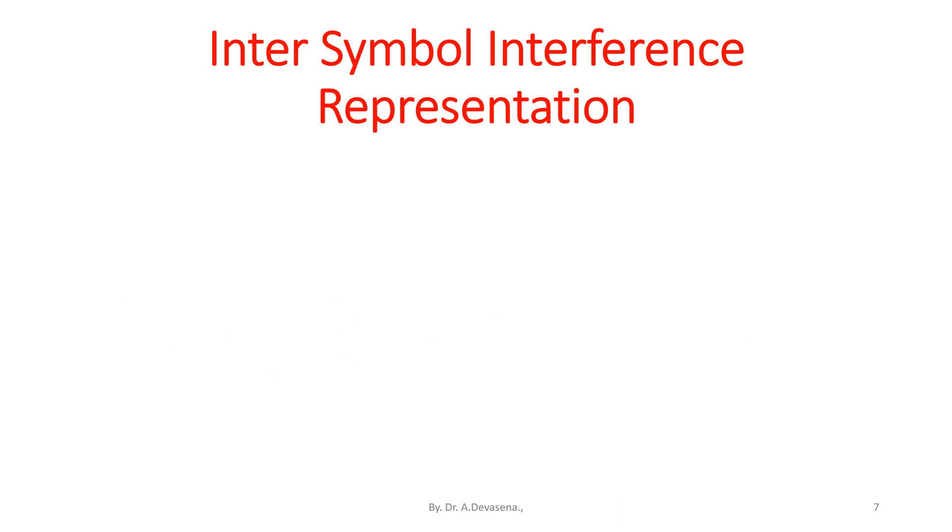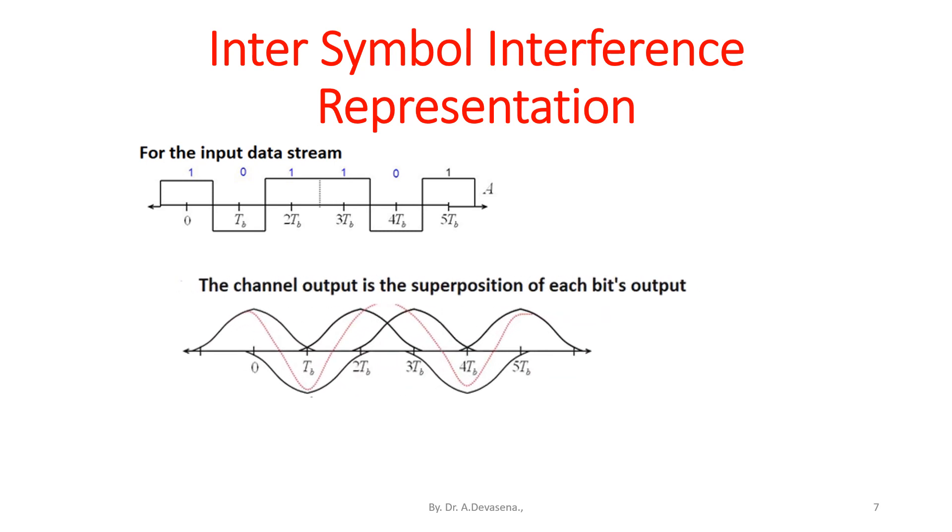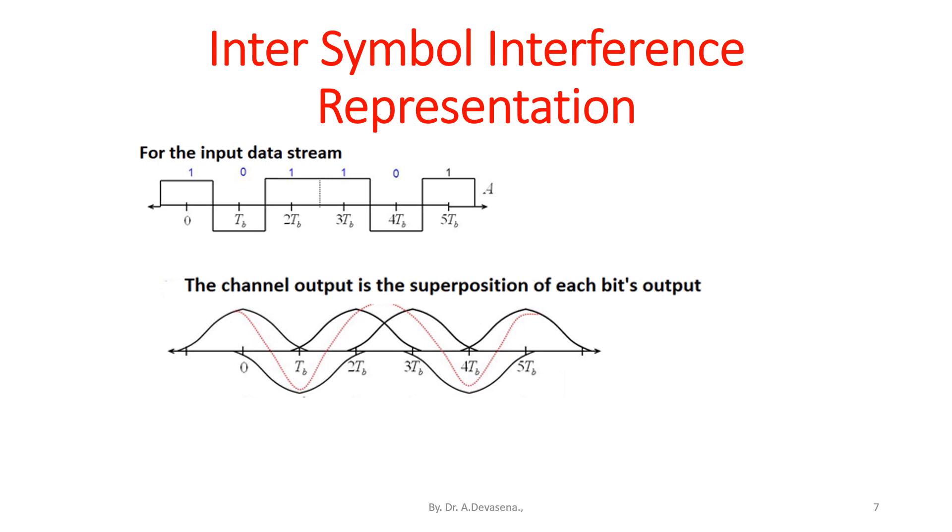Inter-symbol interference representation is shown here. For the input data stream, the channel output is the superposition of each bit's output. This is shown in this diagram. This is the resultant channel output waveform.